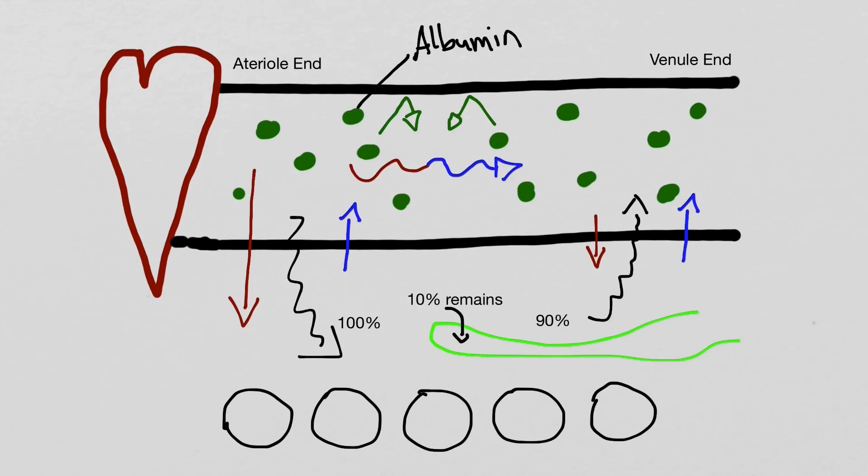In another situation, if a person has hypoproteinemia or less plasma proteins in the blood, the osmotic pressure is going to be decreased. This will increase filtration at the arterial end and decrease reabsorption at the venule end. This will cause edema.